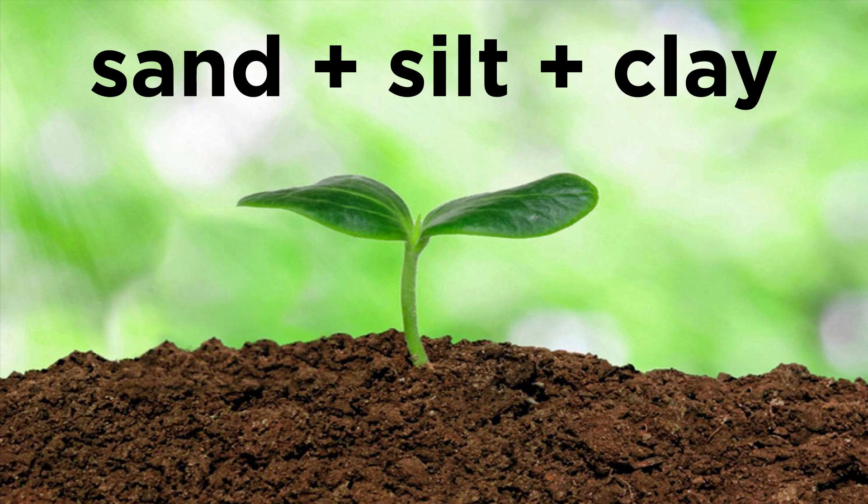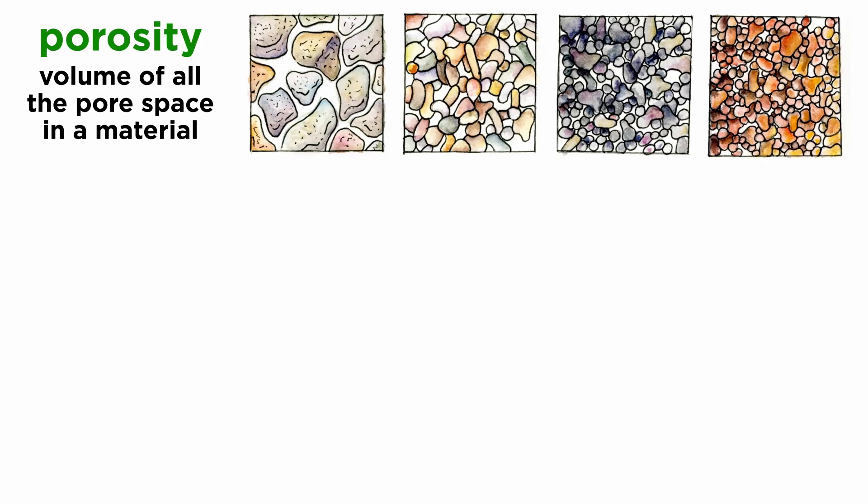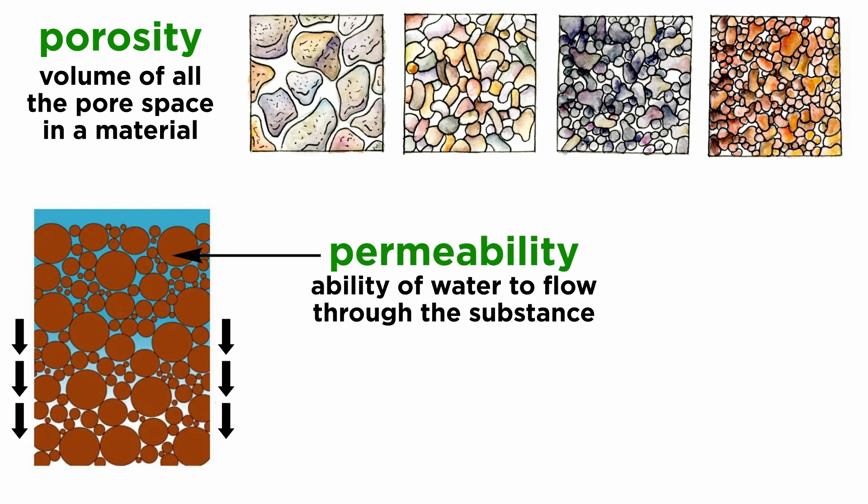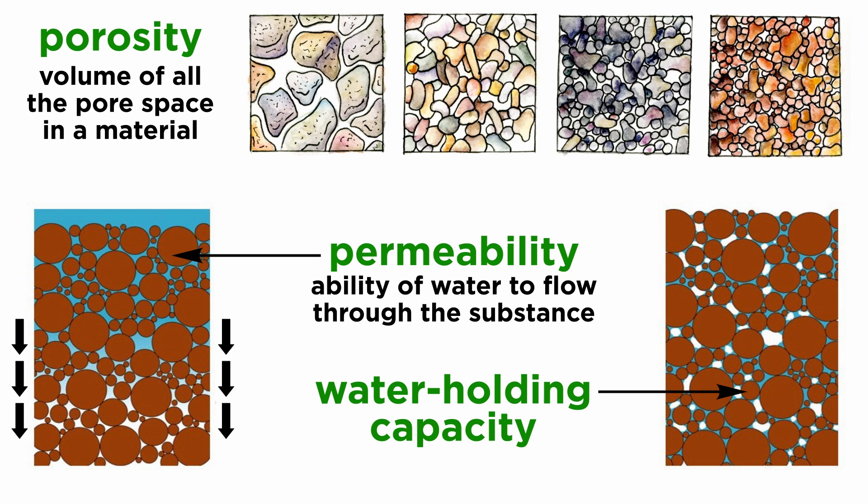The main mineral components of soils are sand, silt, and clay. It is these relative proportions that determine a soil's texture. Properties that get affected by soil texture include porosity, or the volume of all the pores in a material, permeability, or the ability of water to flow through the substance, and water holding capacity.